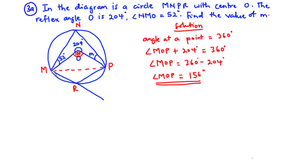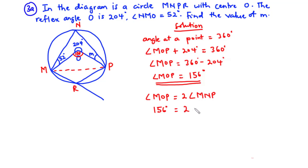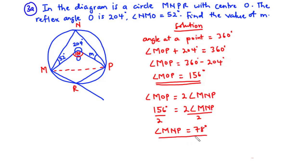This angle is twice the angle MNP. So from the property, angle MOP equals 2 times angle MNP. Therefore 156 equals 2 times angle MNP. Dividing through by 2, we get angle MNP equals 78 degrees.